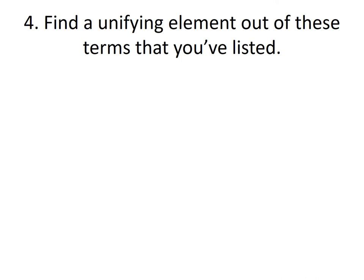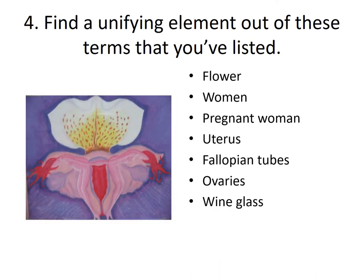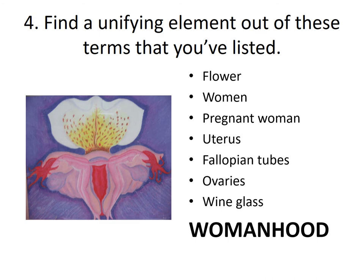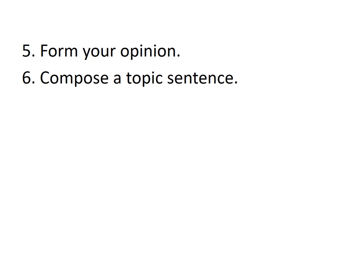The fourth step is to find a unifying element out of the terms that you have listed. So, you might say womanhood, or being a woman, or community. Fifth, form your opinion from the words you have listed and come up with the topic sentence.